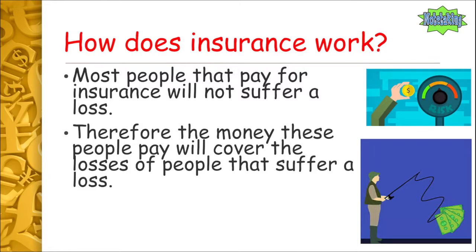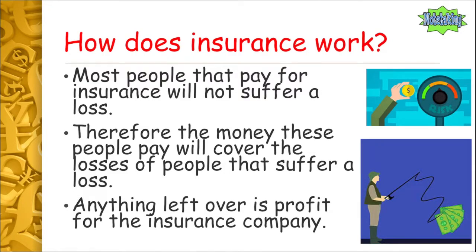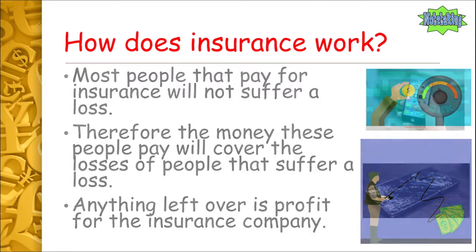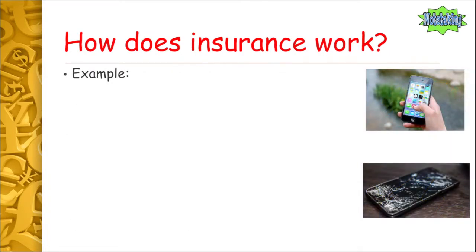Most people who pay for insurance don't suffer a loss, so the money they pay covers the losses of those who do. For example, if I pay for car and house insurance for the year and nothing happens, I don't receive any money — but my fees go to someone who has had an accident or a fire. Anything left over becomes profit for the insurance company, because insurance companies are businesses and their aim is to make a profit.